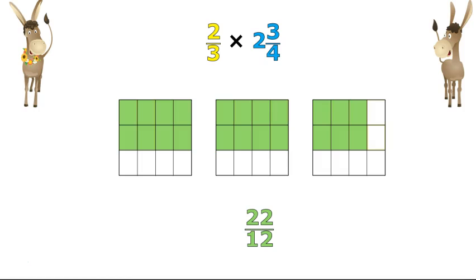So the answer is two and two-twelfths. That's right, but we can simplify. Let's move these four pieces over here to make a whole, and then we'll move these two over here.